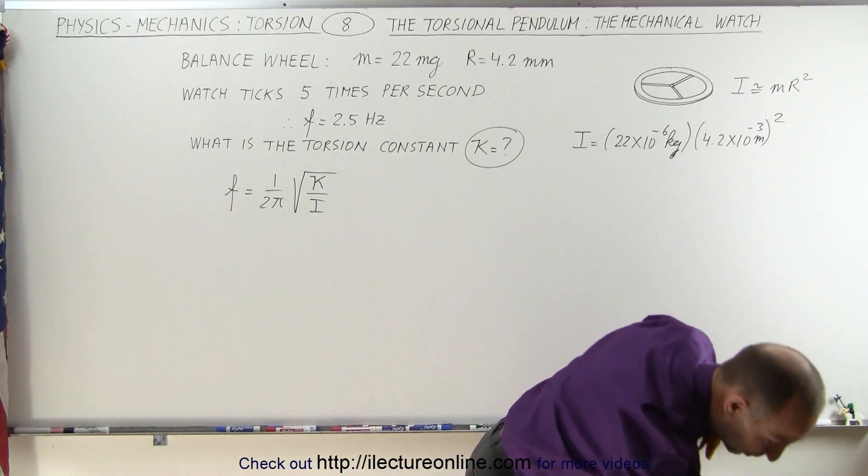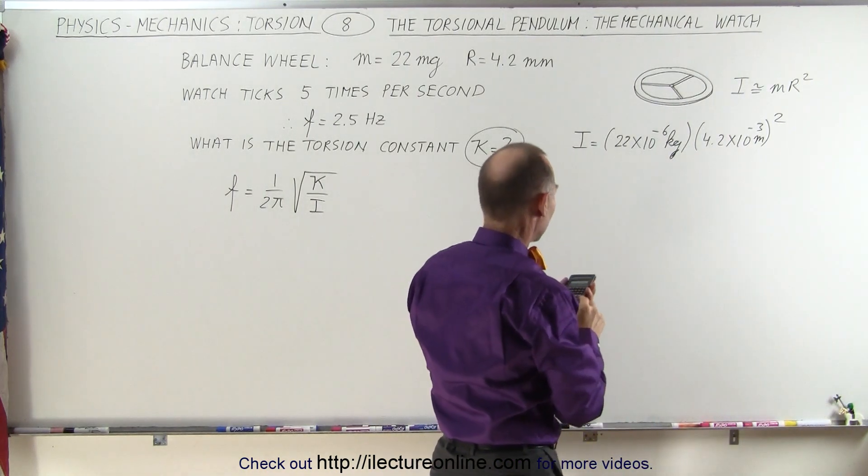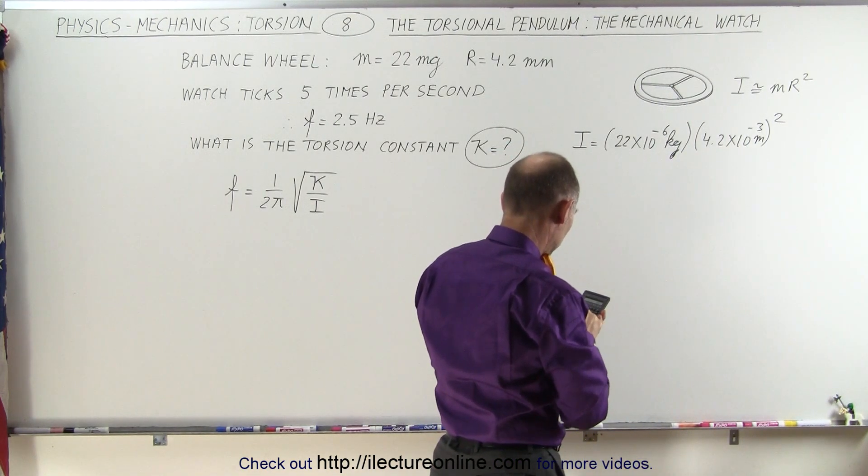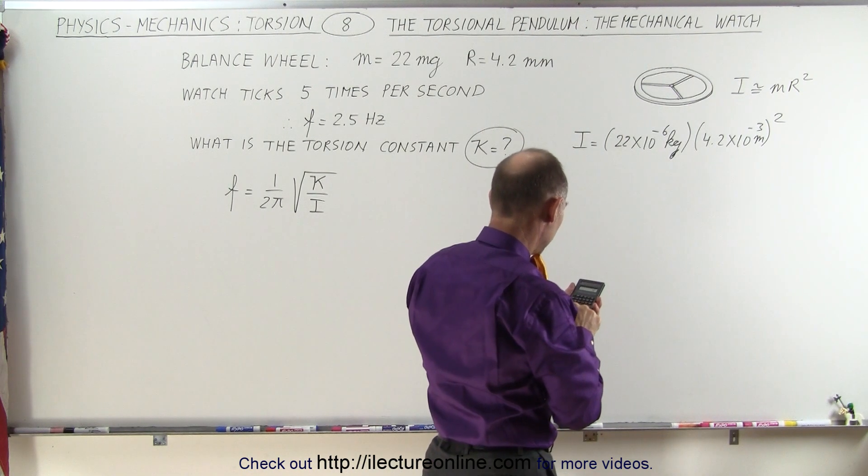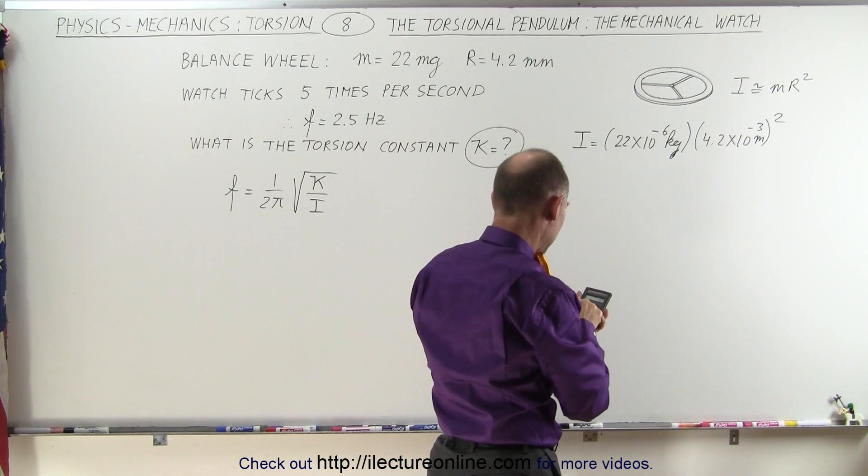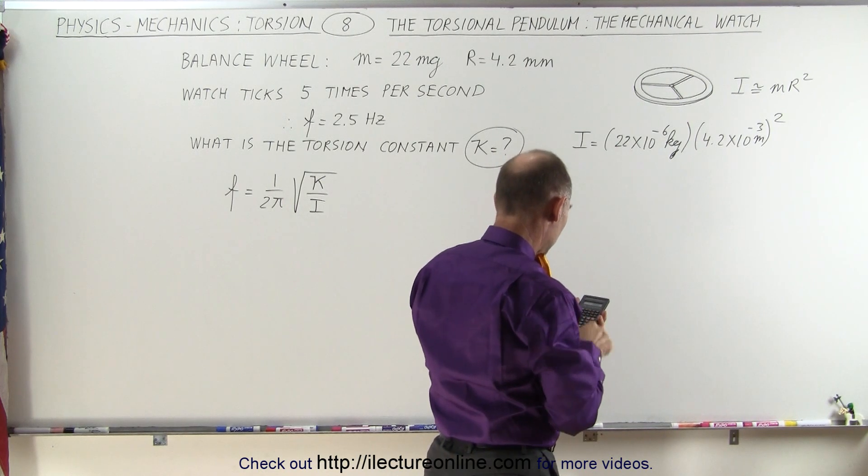That gives us 22 times 10 to the minus 6 times 4.2 times 10 to the minus 3 squared equals—so that's a pretty small quantity.